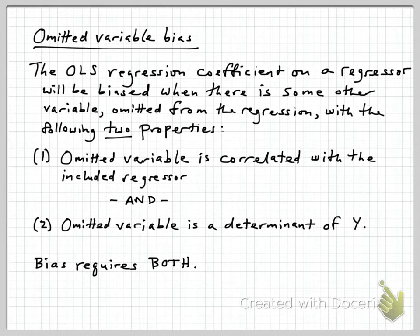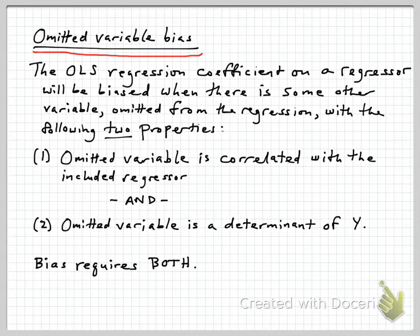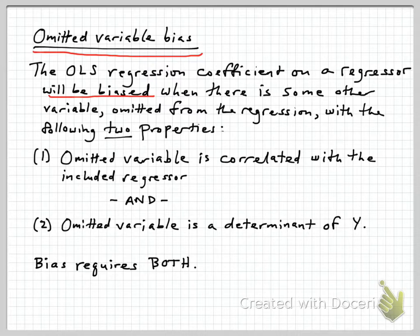In economics and other social sciences, we often use observational data to try to trace out causal effects of one variable on another. The problem of omitted variable bias is a potentially serious problem in which our empirical analysis is going to lead to biased estimates of what a causal relationship might be. To be specific in the regression setting, the OLS or ordinary least squares regression coefficient on a regressor will be biased when there's some other variable omitted from the regression that has the following two properties — and both of those are important.